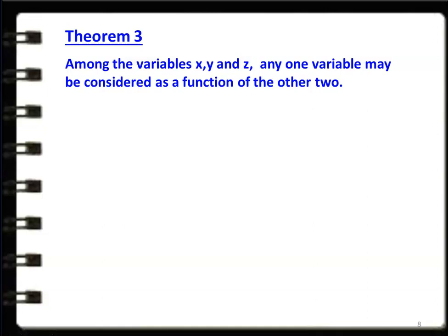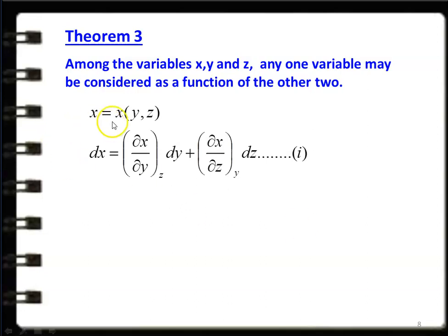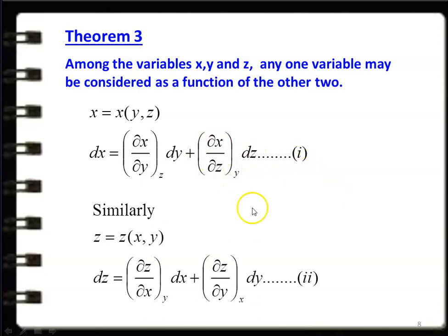Theorem 3. Among the variables x, y, and z, any one variable may be considered as a function of the other two. If x is a function of y and z: dx = (∂x/∂y) at constant z · dy + (∂x/∂z) at constant y · dz. This is equation 1. Similarly, z is a function of x and y: dz = (∂z/∂x) at constant y · dx + (∂z/∂y) at constant x · dy. This is equation 2.